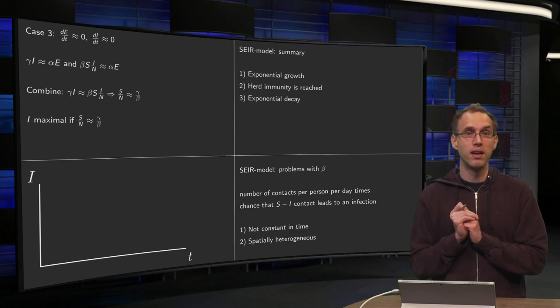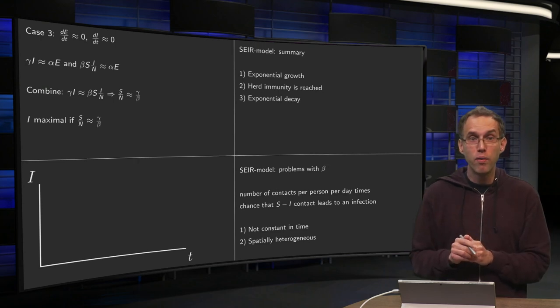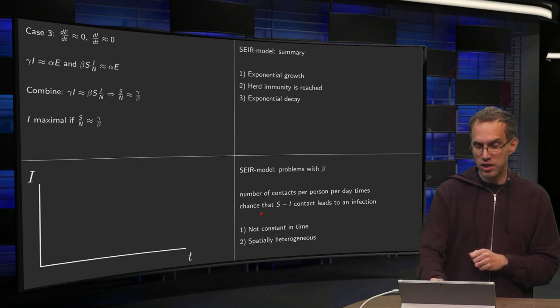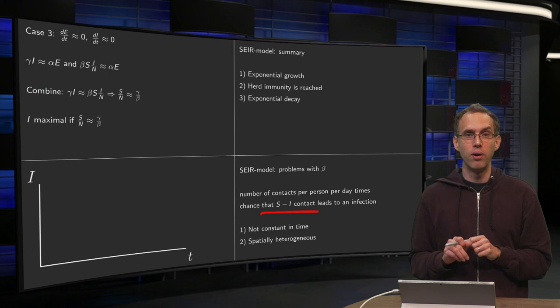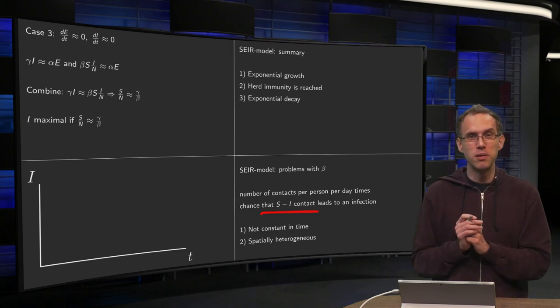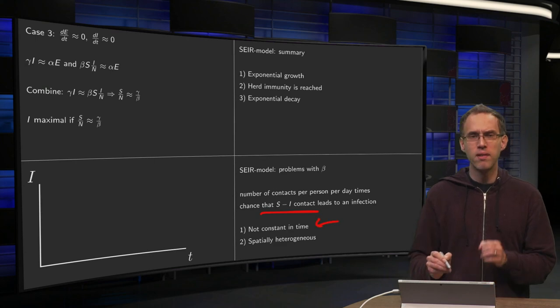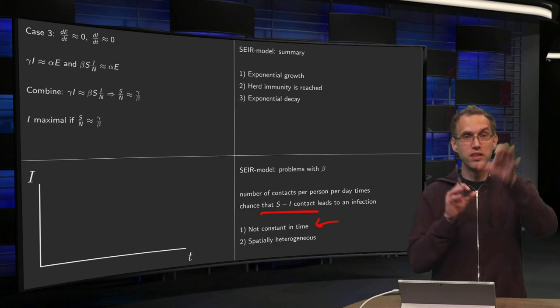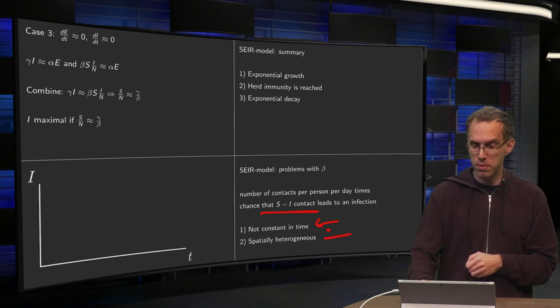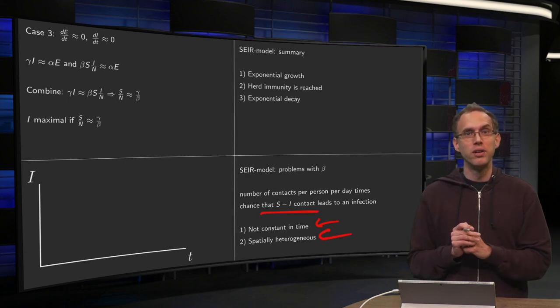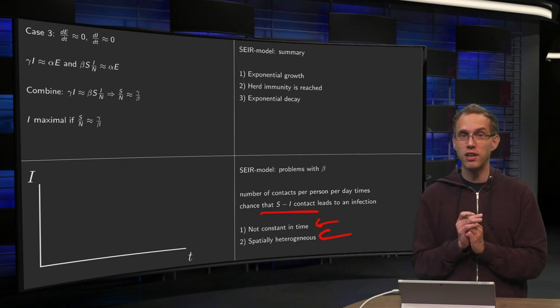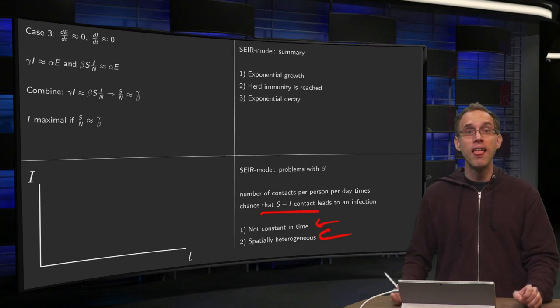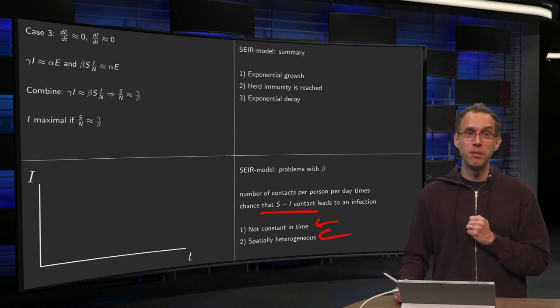So if there are a large number of infections, people will always try to lower the number of contacts and this chance that SI leads to an infection. People are also trying to lower that, for example, by keeping some distance. So this beta is difficult. It's not constant in time. And it can be different in different regions already, in different regions of the Netherlands. So you have spatial heterogeneity. So in order to get a really good model for this, you will need to take these two effects certainly into account. Otherwise, don't believe your model. And this will be a challenge.